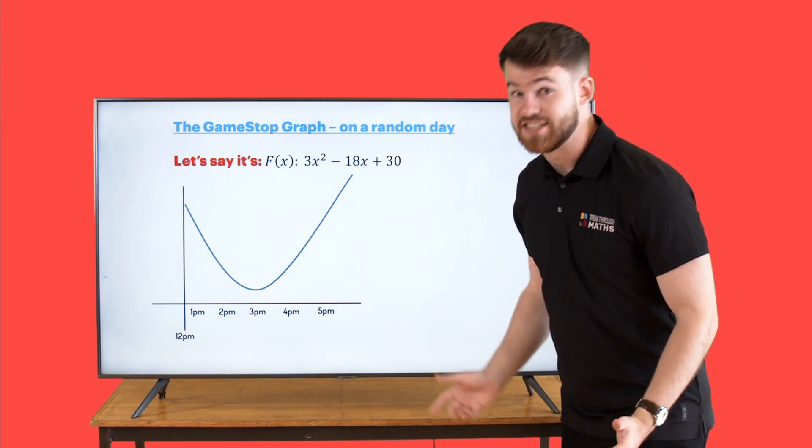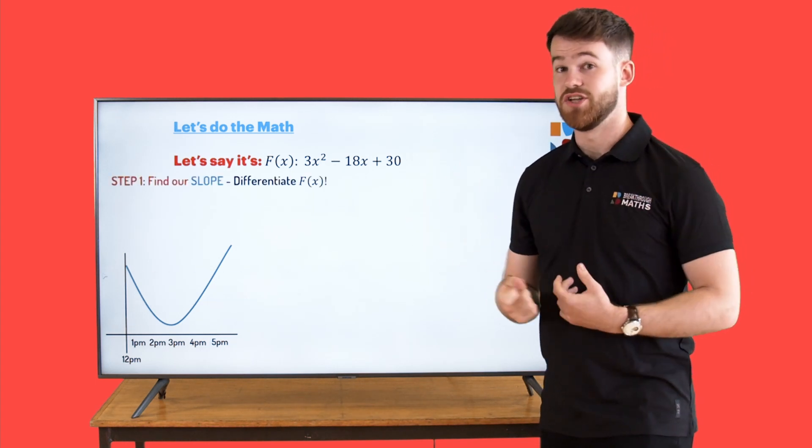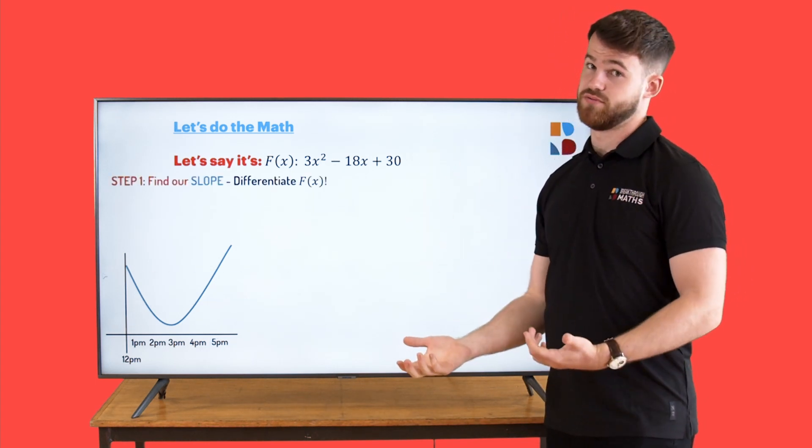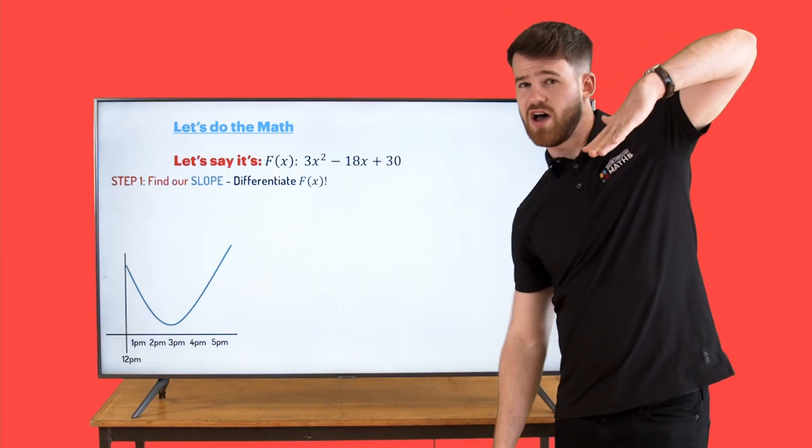Step one is to get the slope. If you differentiate an equation, you get the equation for its slope. And then if we put that equal to zero, that will give us the minimum point. Because if you think about it, when we have the equation for the slope, it's not negative, so it's not going down.